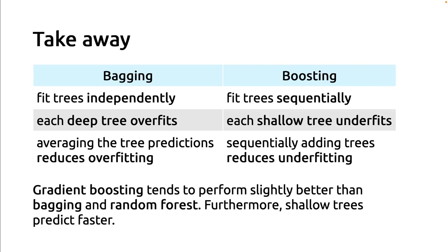The alternative strategy — philosophically the opposite — is to fit individual trees sequentially instead of independently. To fit the second tree in a boosting ensemble, you need access to the prediction error of the first tree, whereas in bagging there is no dependency between trees. In boosting, you use shallow decision trees that individually underfit, but because the trees sequentially correct each other's prediction errors, we progressively reduce the underfitting of the previous stages.